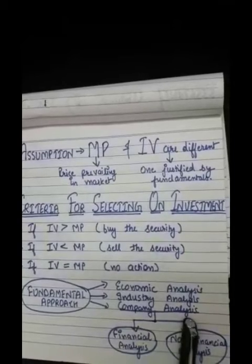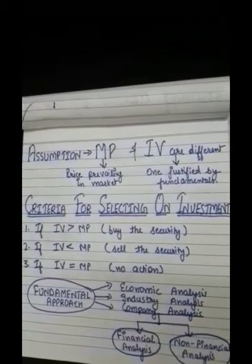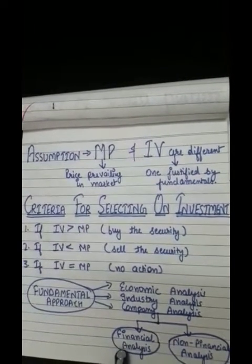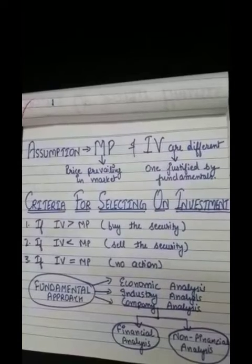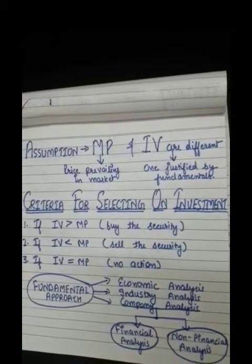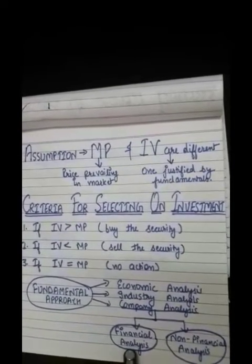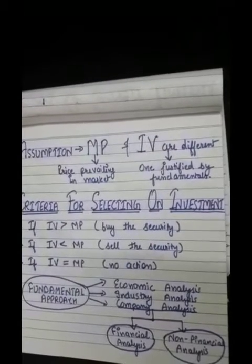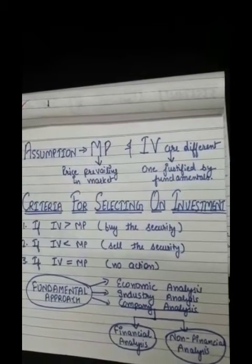Third is company analysis, where the main focus is on the relationship between the revenue and expenses of the firm and the economic and industry changes. Company analysis includes two kinds: financial analysis and non-financial analysis. Financial analysis includes asset value, earning value, quantitative analysis, and ratio analysis. Non-financial analysis involves gathering and analyzing information from media, stock exchange, director annual reports, and includes internal as well as external factors.